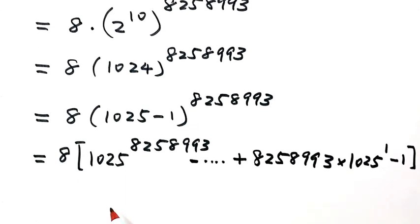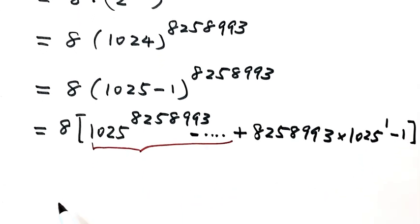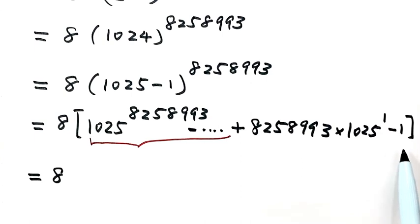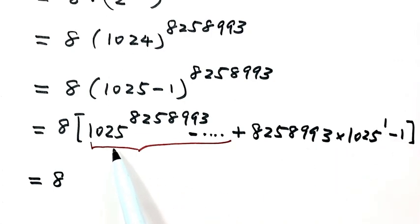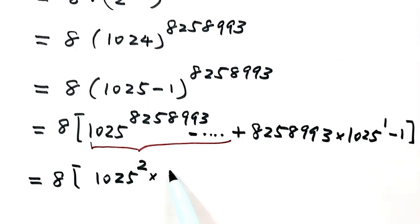Next, we're going to combine all the terms before the last two terms. The term before the last has a factor of 1025 to the power of 1, so all previous terms include the factor 1025 squared. We combine them by taking out the common factor 1025 squared, times M, where M is an integer.